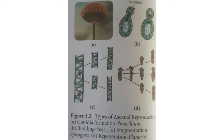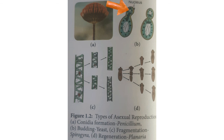The second type is budding, which occurs in yeast. A small bud develops and gradually that bud detaches from the parent yeast and germinates into a new yeast. It is a type of asexual reproduction which occurs in yeast.